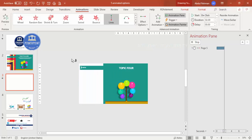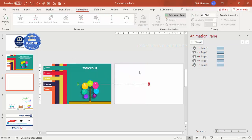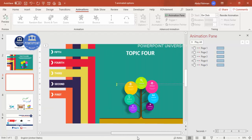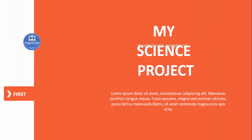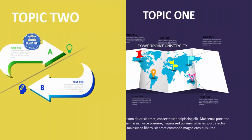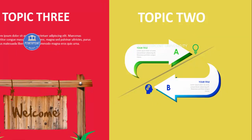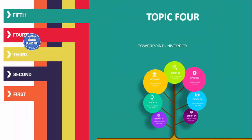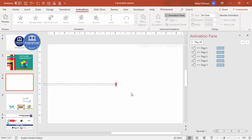Press Escape when done. Now preview the animation — nothing is visible at first since all objects start off-slide. When you click, the first page slides in showing "My Science Project," then each subsequent click brings in the next topic slide. You can adjust the animation speed depending on your requirement.